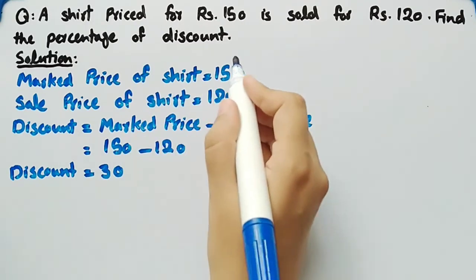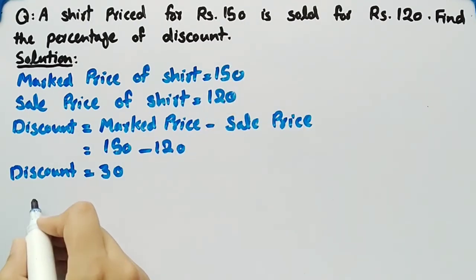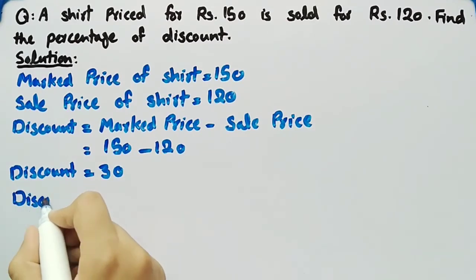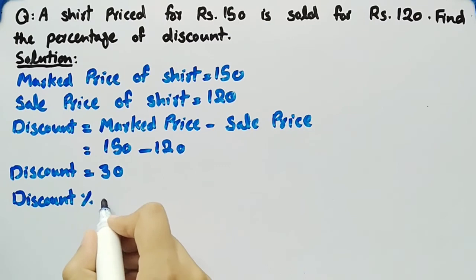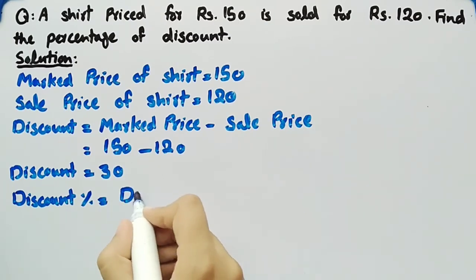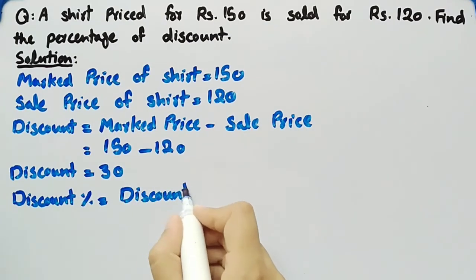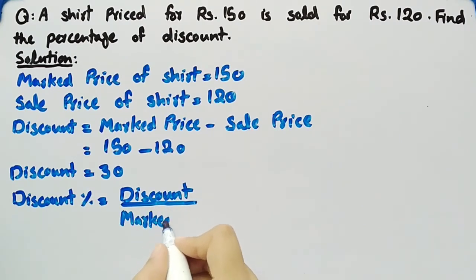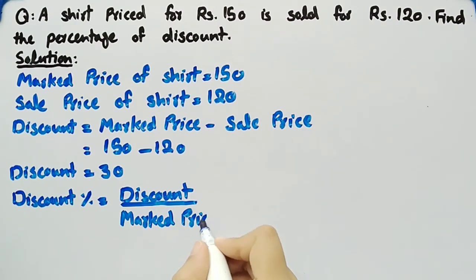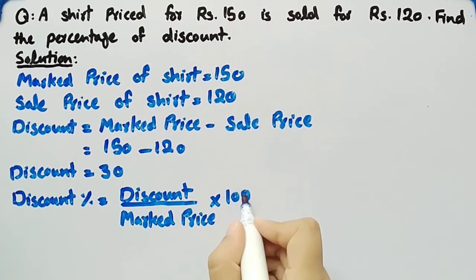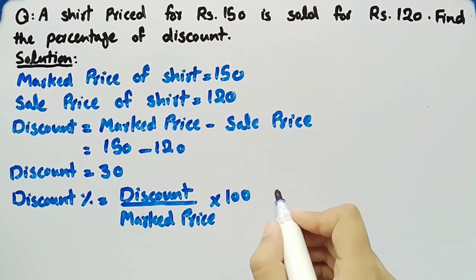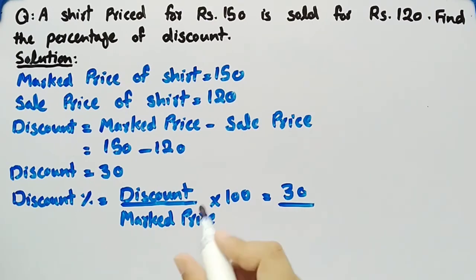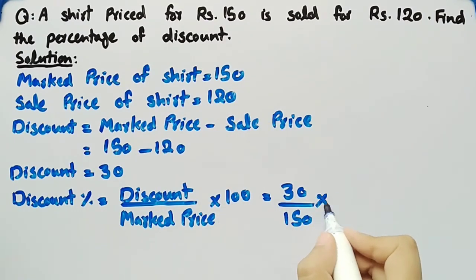In this question we have to find the percentage of discount. The formula for percentage of discount is: discount percentage equals discount divided by marked price, multiplied by 100. Substituting the values, discount is 30 and marked price is 150, multiplied by 100.